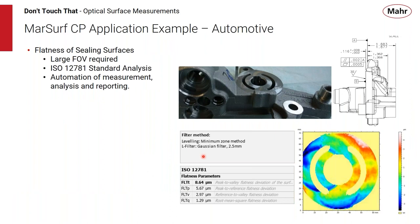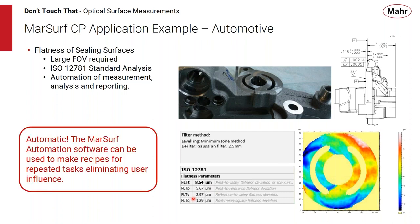Another automotive application — flatness measurements on sealing surfaces. Using the CP tool on a roughly two-inch diameter sealing surface, we capture ISO 12781 flatness parameters including total peak-to-valley flatness. This is set up with automation software: place the part in a fixture, select the part name from a dropdown, hit start, and walk away — the tool acquires data, analyzes it, and generates a pass/fail report with minimal user interaction.